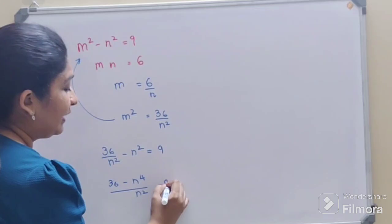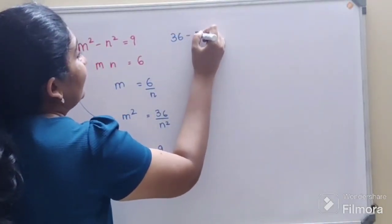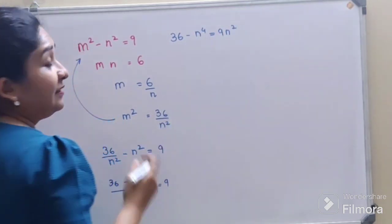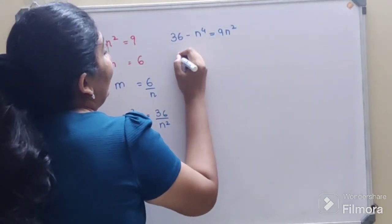Let's shift this n square on this side, so I'll say 36 minus n raised to 4 is equals to 9 and 9 n square. Now shift everything on this side, so we'll have n raised to 4 plus 9 n square minus 36 is equals to 0.